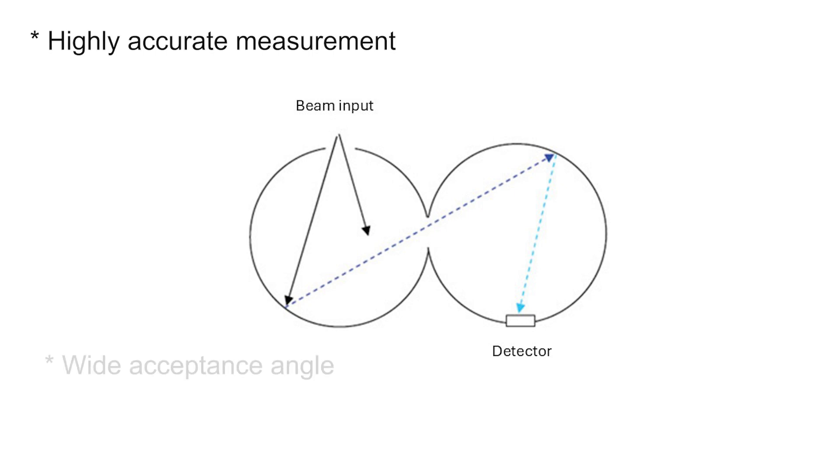This gives the Ophir 3AIS a very wide acceptance angle with very little dependence on the beam's incidence angle or position in the entrance aperture.